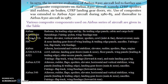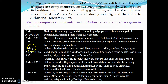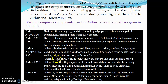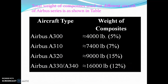The Airbus series including A300 B2, A300, A310, A319, A320, A330, A340, and so on are the different Airbus models. In these, various components were made using composite materials.